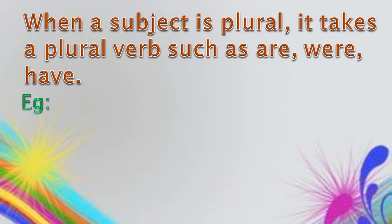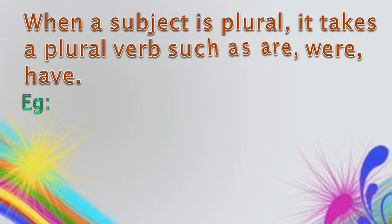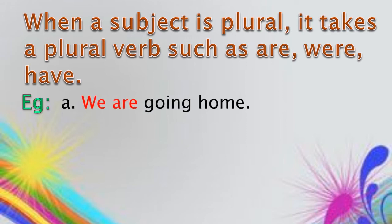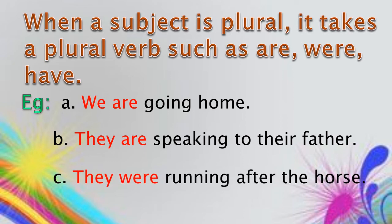When a subject is plural, it takes a plural verb, such as: are, were, have, etc. Example: 'We are going home.' 'They are speaking to their father.' 'They were running after the horse.' Here, 'we' and 'they' are plural subjects, so they take plural verbs.